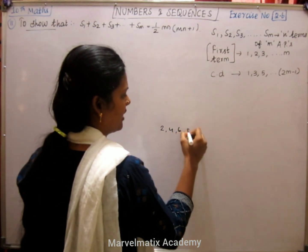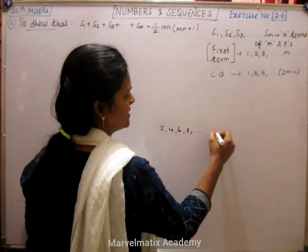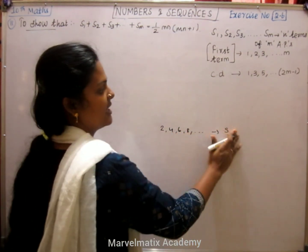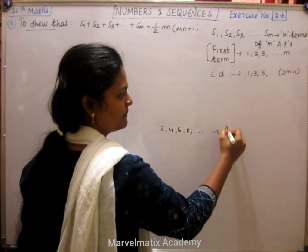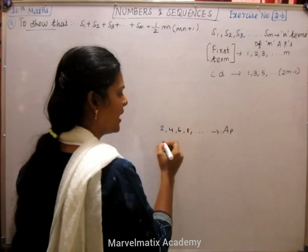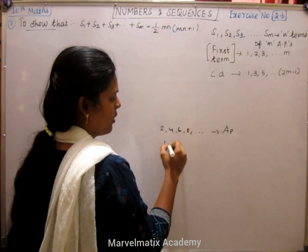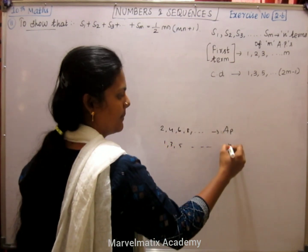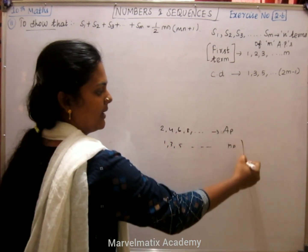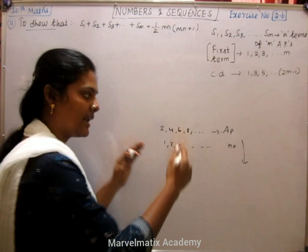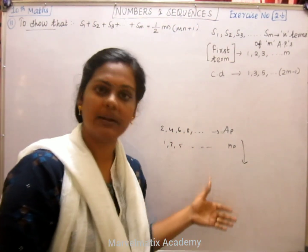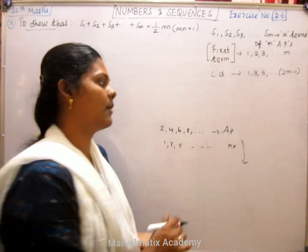Our first example. Here is one, three, five — that's one AP. So here are many APs; there are many arithmetic progressions.